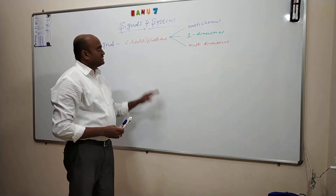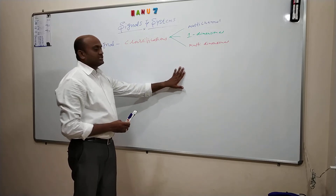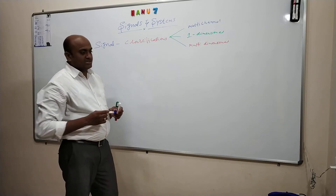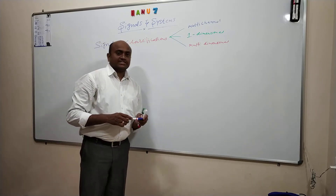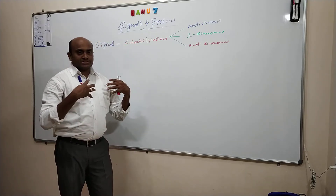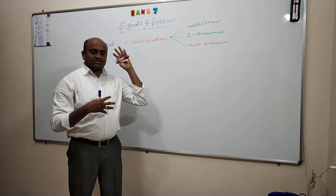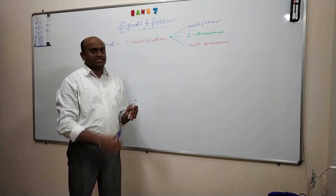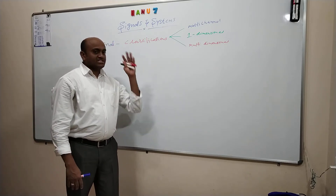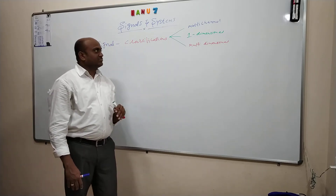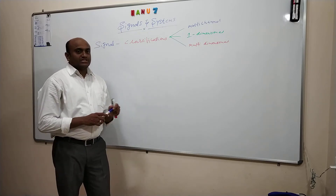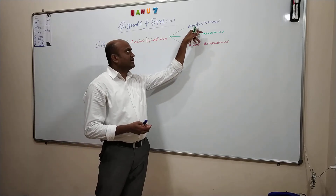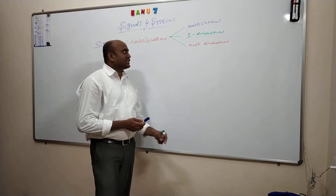What type of signals are called multichannel signals? A multichannel signal is a signal which is generated from multiple sources. For example, take an EEG or ECG — they will connect multiple sensors to the patient's body. If it is ECG, they will connect sensors near the heart; if it is EEG, they will connect sensors near the head and brain. So we are generating a signal from multiple sources — such signals fall under the category of multichannel.